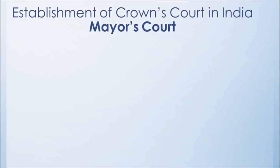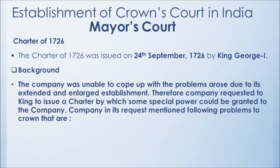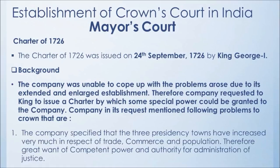The Charter Act of 1726 was issued on 24 September 1726 by King George I. It was a charter by which some special power could be granted to the company. The company, in its request, mentioned the following problems to the Crown: first, the company specified that the three presidency towns had increased greatly in respect of trade, commerce, and population, and therefore there was a great want of competent power and authority for the administration of justice.